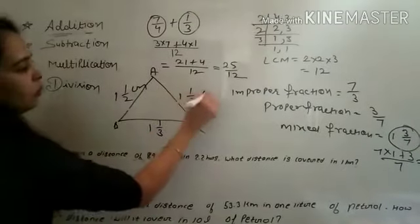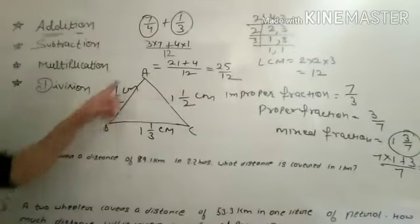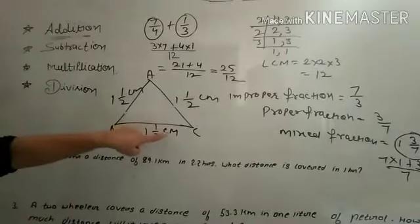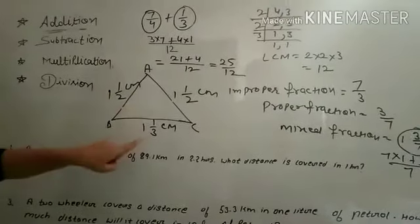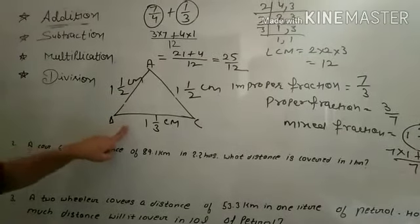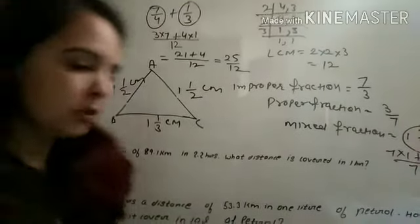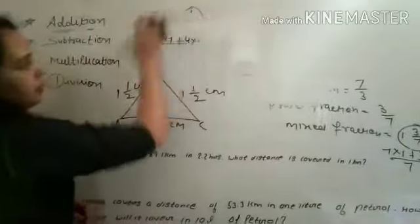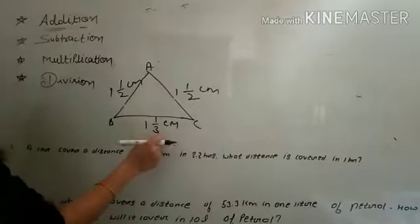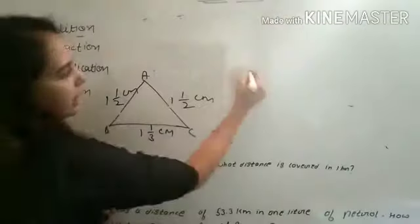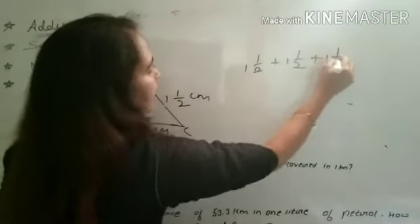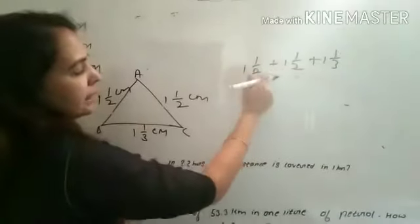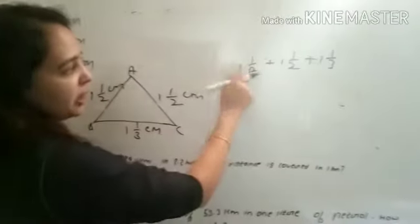How to find the perimeter? The perimeter is the sum of all sides. So we need to add: 1 and 1/2 plus 1 and 1/2 plus 1 and 1/3. First, change each mixed fraction into an improper fraction before adding.